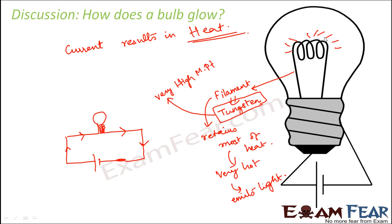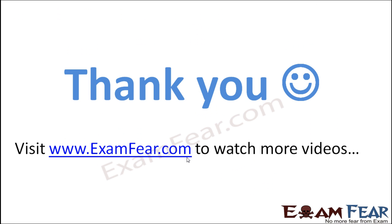So I hope you understand how exactly a bulb glows. There were several factors involved: first, the circuit has to be complete; the material forming the circuit should be a good conductor of electricity; and the bulb has to have a tungsten filament which retains all the heat produced by the current flow and then emits light.